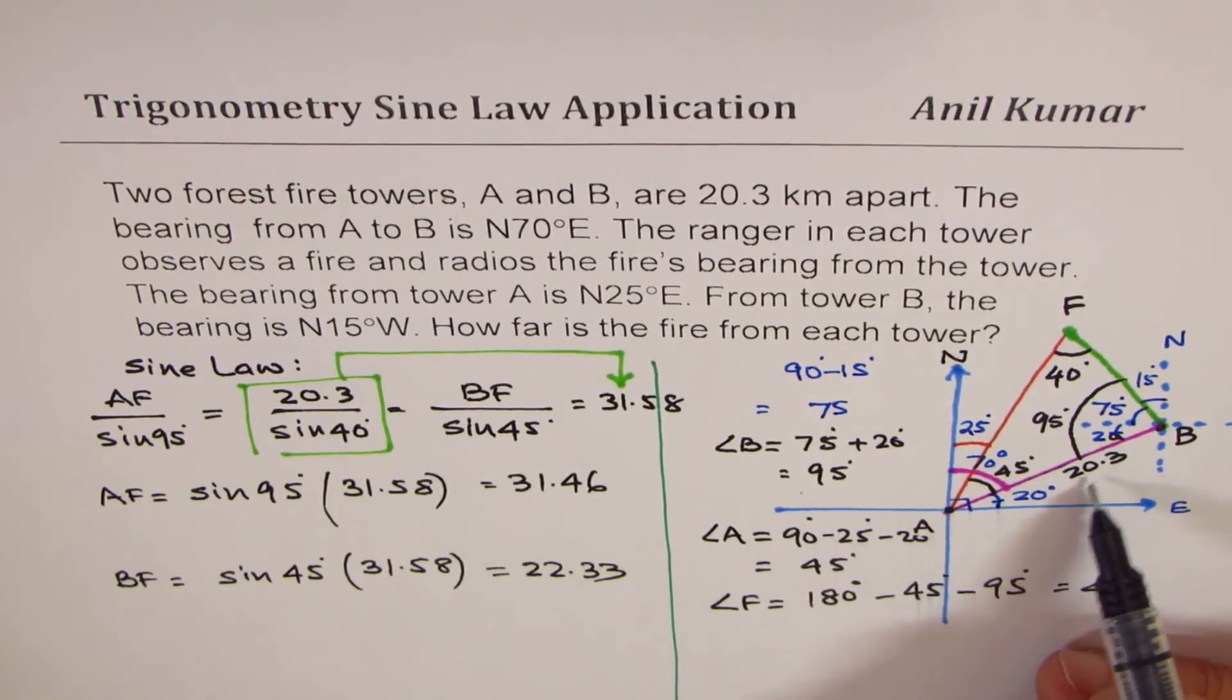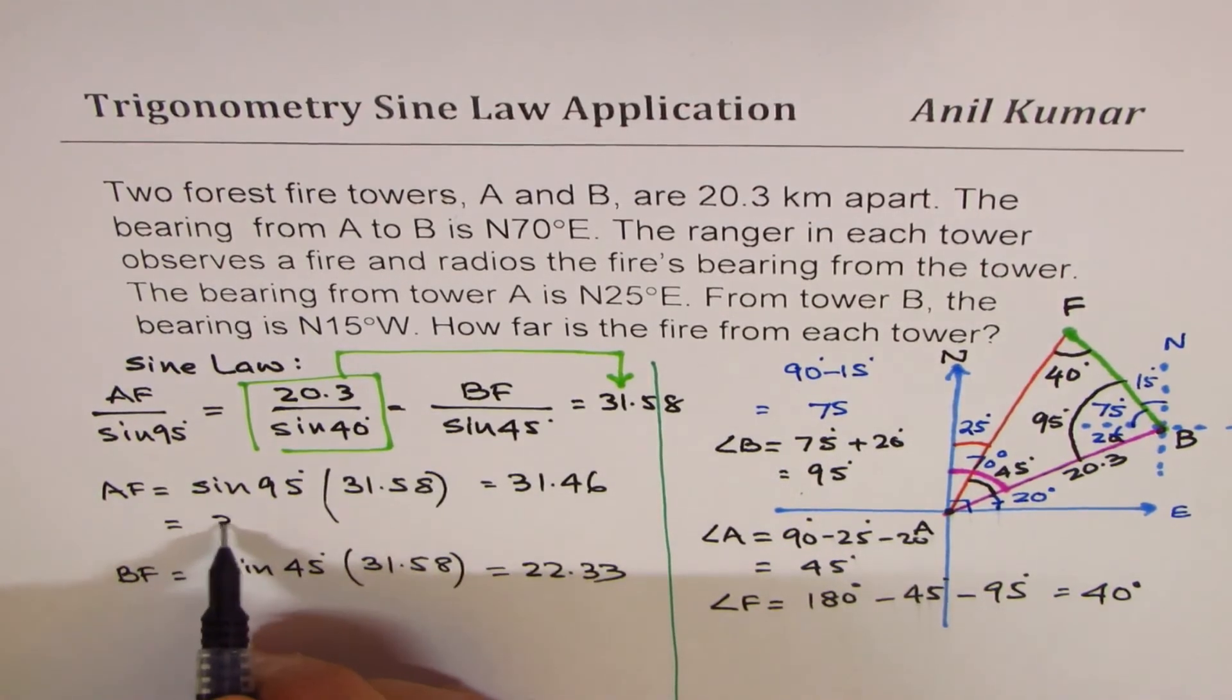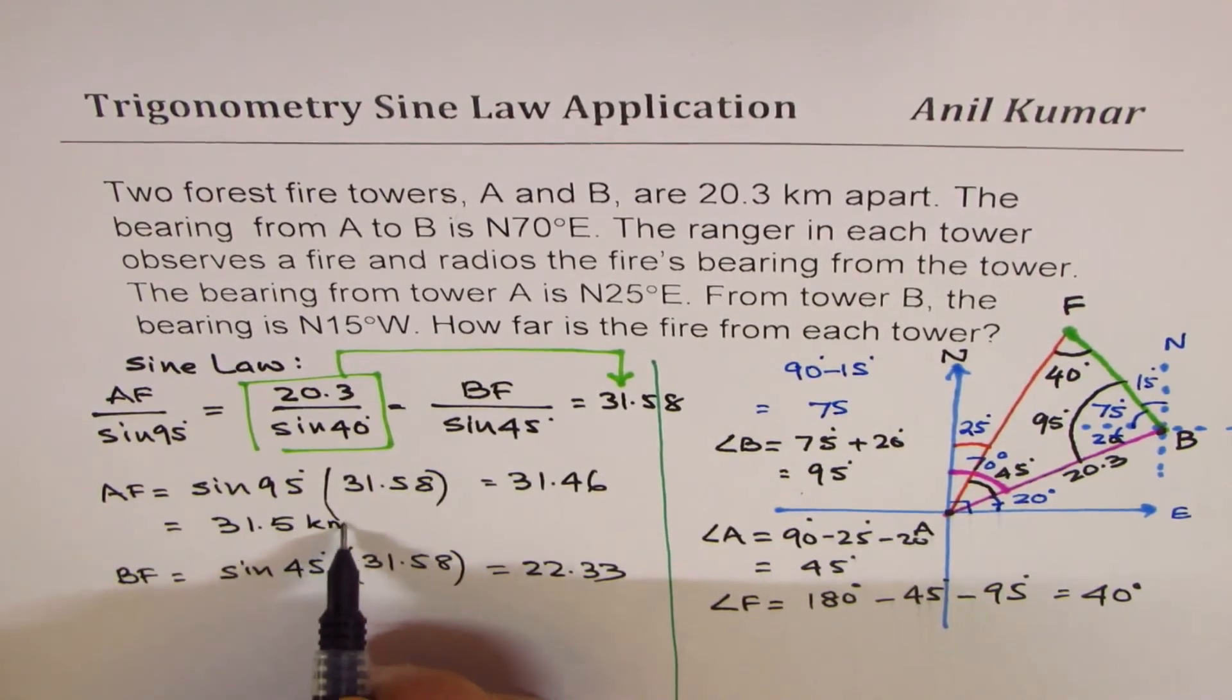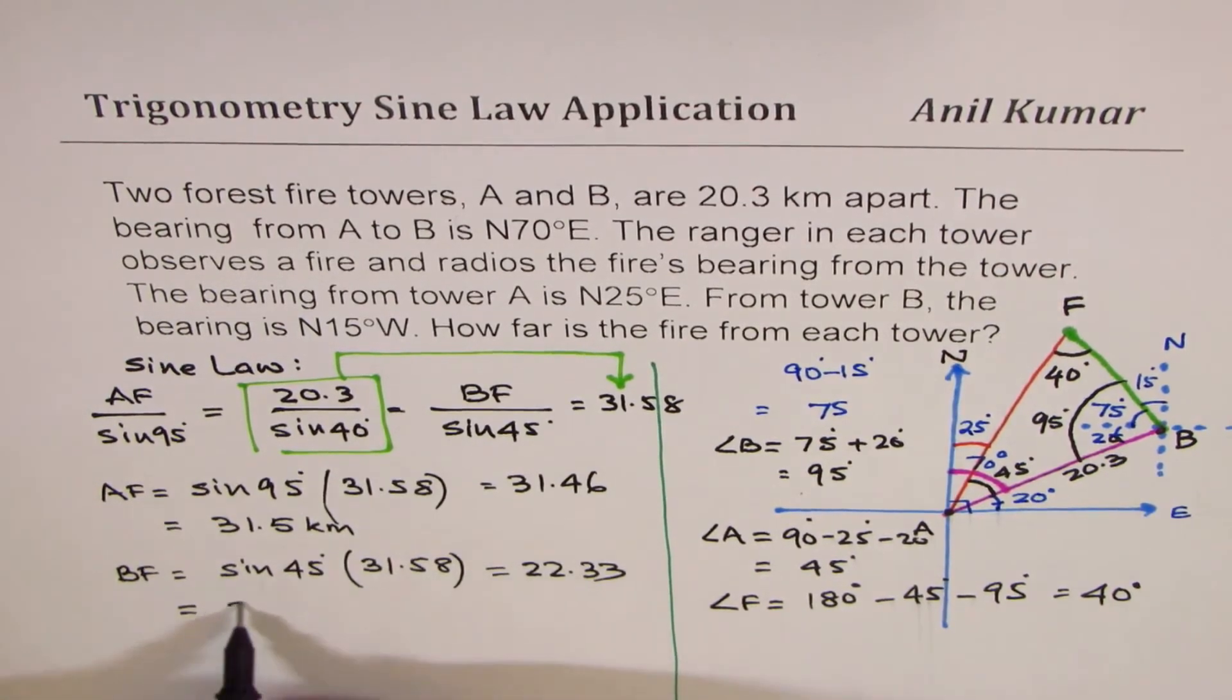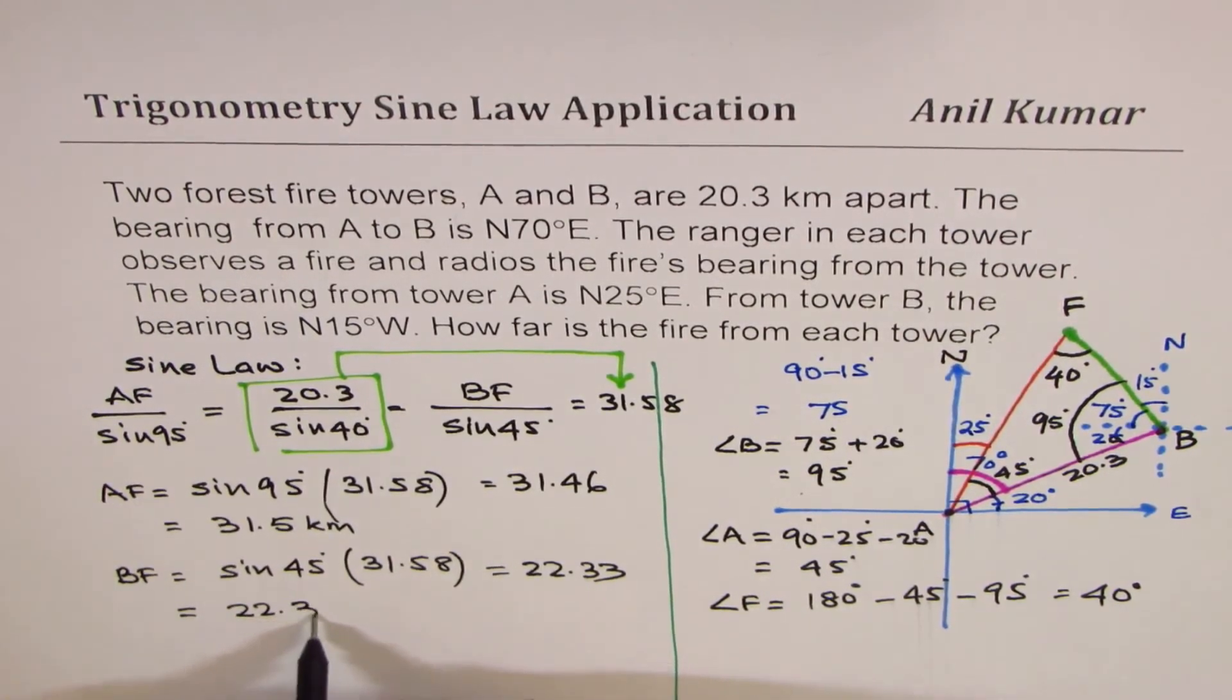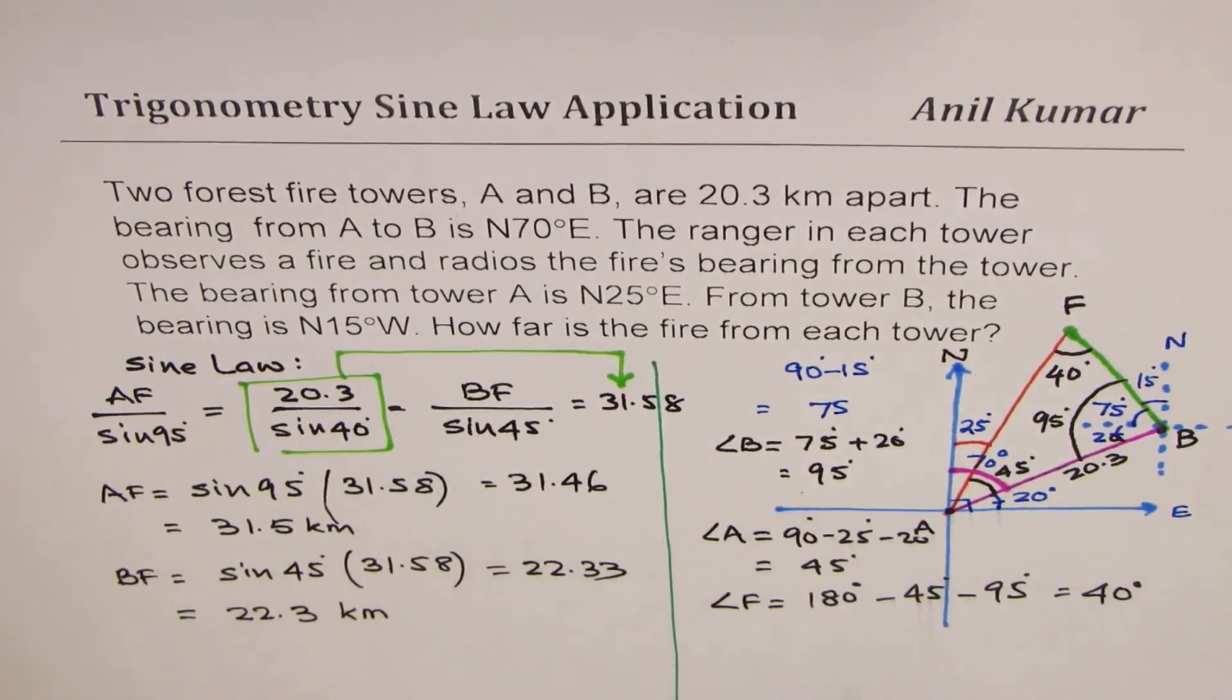Now since 20.3 is given to one decimal place, let me round this to one decimal place. So we get 31.5 kilometers and BF will be 22.3 kilometers. So that is how we can find the answer.